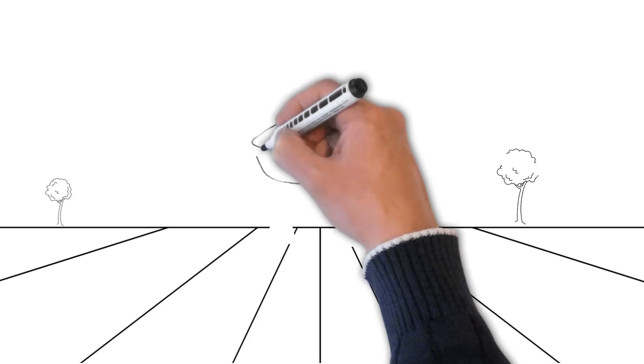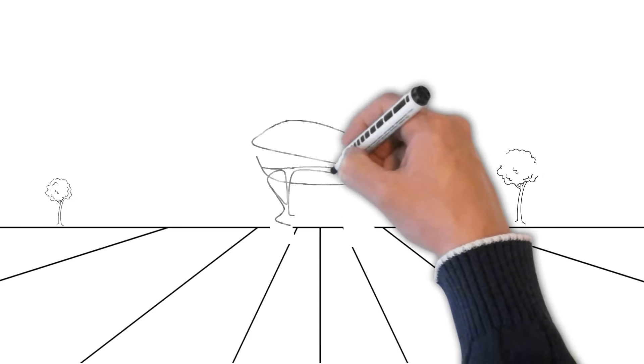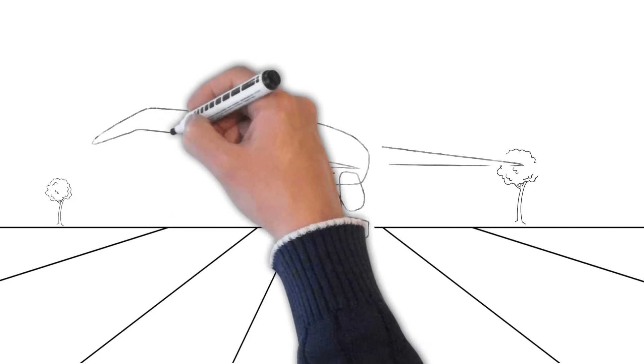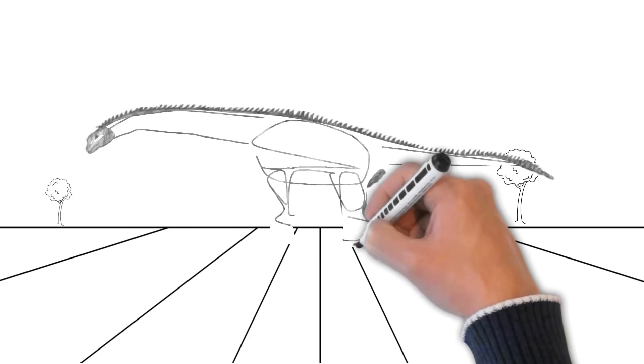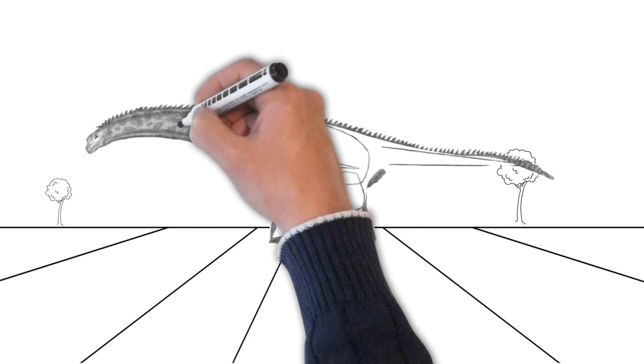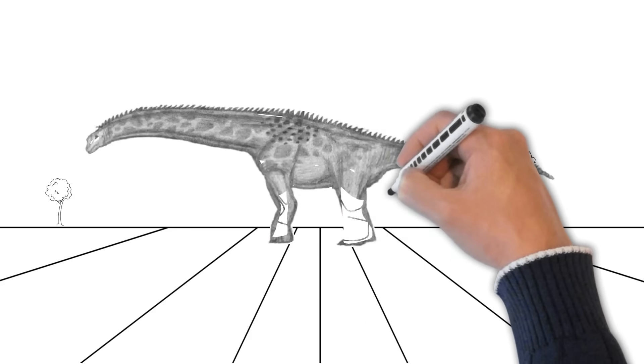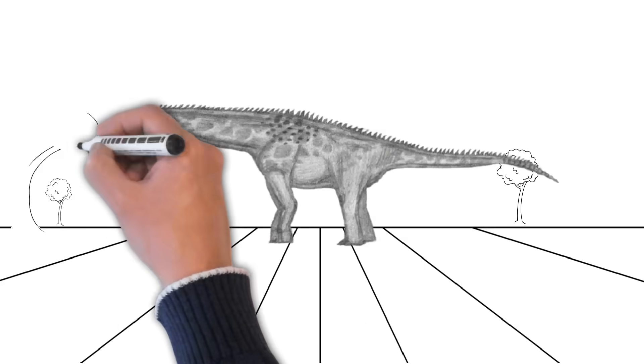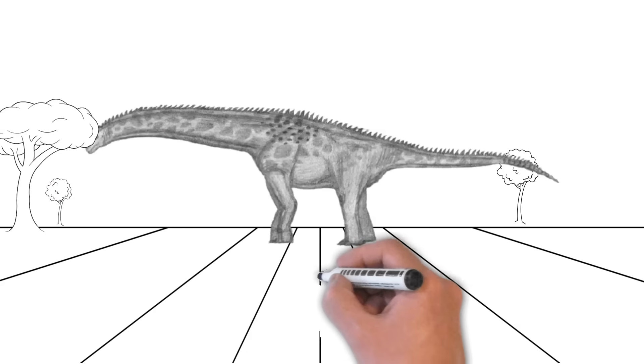Next, we meet Isosaurus, a massive herbivore dinosaur with a long neck, making it one of India's most famous sauropods. Isosaurus lived around the same time as Rajasaurus and could grow up to 60 feet long. It used its long neck to reach high into trees to munch on leaves.